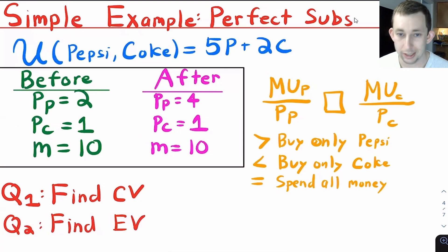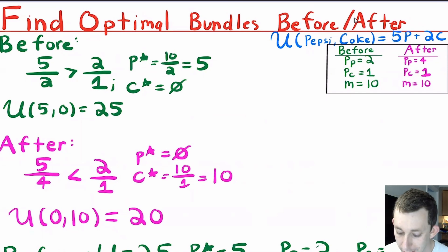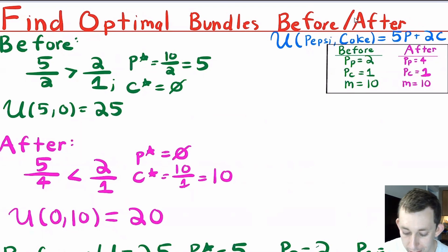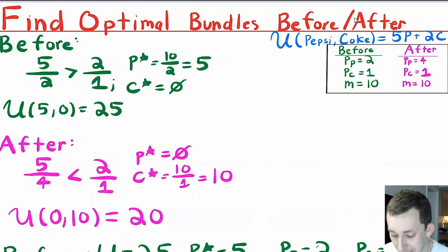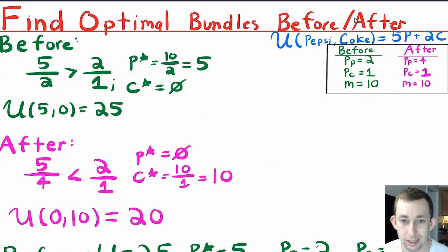The two questions are to find the compensating and equivalent variation. First we find the optimal bundles before and after the price change. Before the price change, the marginal utility of Pepsi over price of Pepsi is 5/2, and the marginal utility of Coke over price of Coke is 2/1, so we're only buying Pepsi. With $10 and Pepsi at $2, we buy 5 Pepsi and 0 Coke. Plugging into the utility function gives a utility of 25.